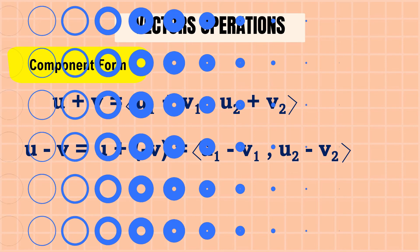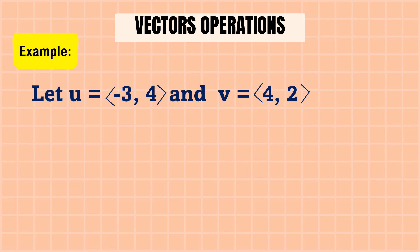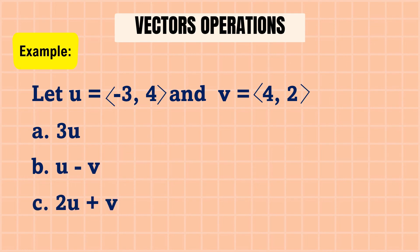Let's have some examples. Let u = (−3, 4) and v = (4, 2). We're going to find: 3u, then u − v, and lastly 2u + v.